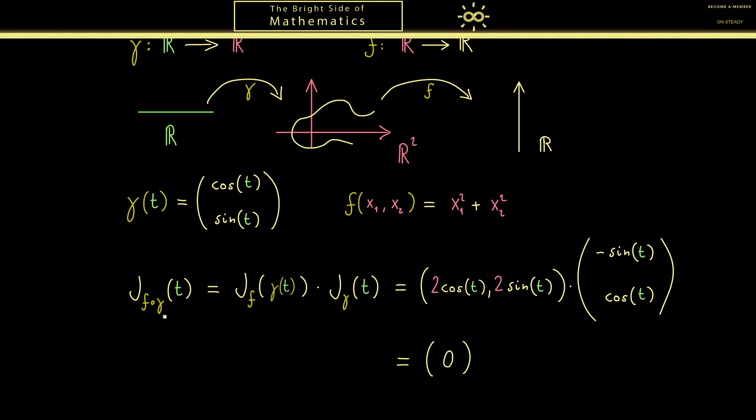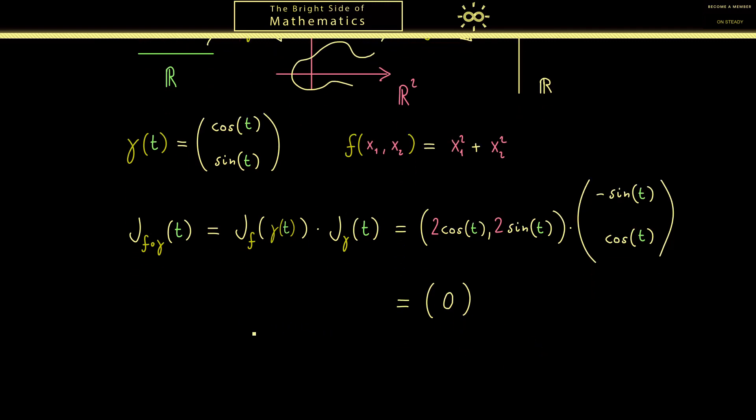Indeed this is an interesting result and it has some geometric meaning. And in order to see this let's rewrite this chain rule again. Namely let's try using the gradient in the calculation. Of course you know the gradient of f is simply the transpose of this Jacobian matrix here. So simply this vector here but as a column vector. And then you should recognize the calculation we do here is simply the standard inner product in R².